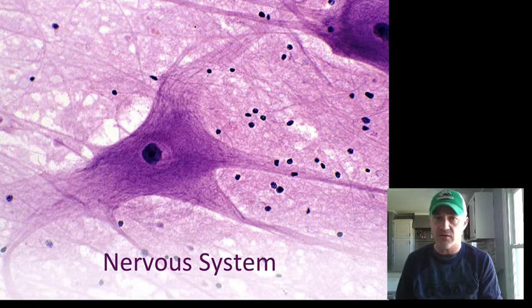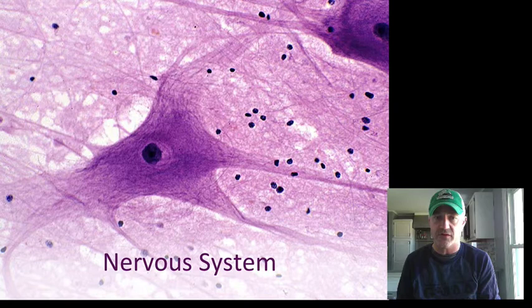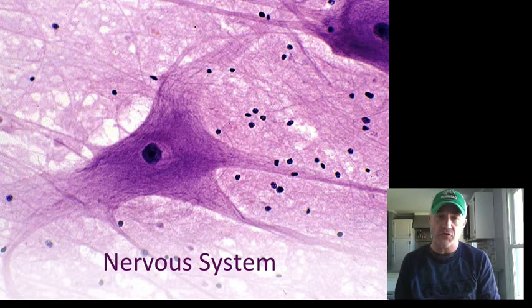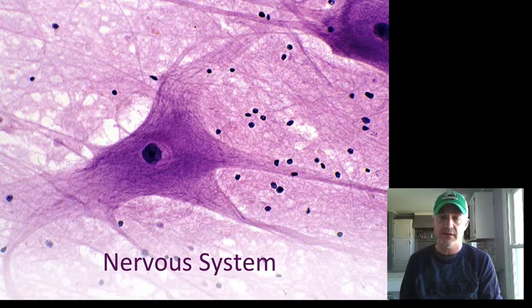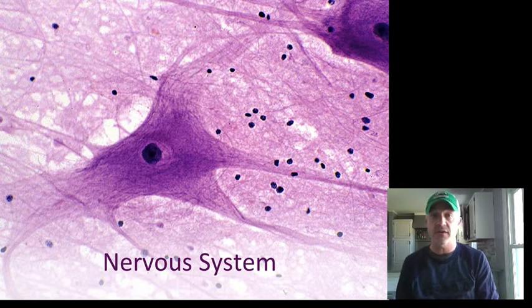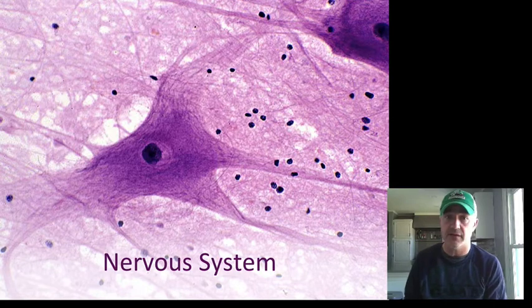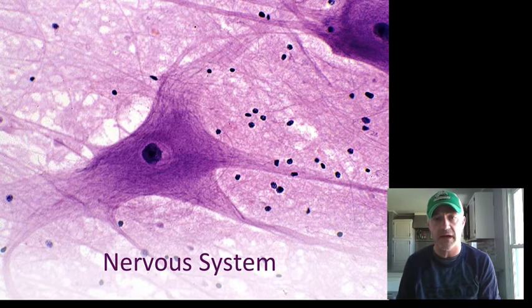In the second show, we'll take a look at the support cells of the nervous system, which are the neural glial cells. And then in the final show, we'll actually look at some of the main parts of the central nervous system — things like the cerebrum, cerebellum, and the spinal cord.